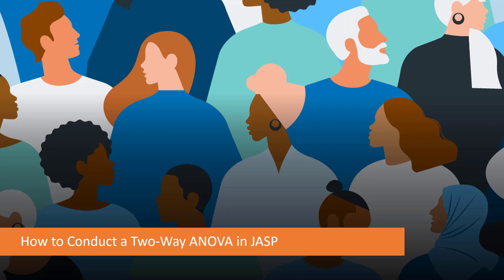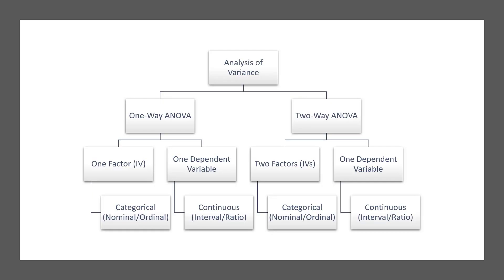When we're conducting a two-way ANOVA, we're extending our comparison beyond just one factor, like we did with one-way ANOVAs. With a two-way ANOVA, we're able to simultaneously examine the influence of two independent variables or factors on the means of our groups. It allows us to explore not only the individual effects of each factor — our main effects — but also whether the effects of one variable depend on the level of another variable, which we call the interaction.